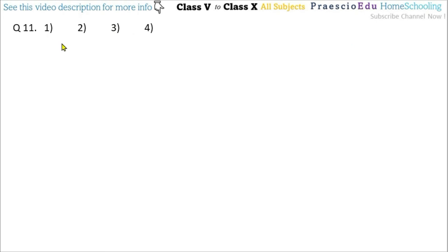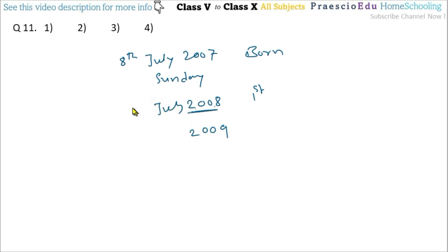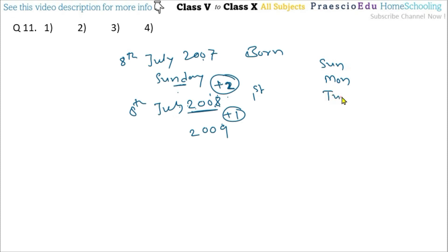Question number 11: Manda was born on Sunday, 8th July 2007. On which day will her second birthday fall? First birthday is 2008 (leap year), second birthday is 2009. From 2007 to 2008: add 1 day (but leap year has February before July, so add 2 days). From 2008 to 2009: add 1 day. Total = 3 days ahead. Counting 3 days from Sunday: Monday(1), Tuesday(2), Wednesday(3). Second birthday falls on Wednesday, given in option number 4.